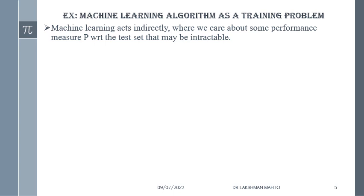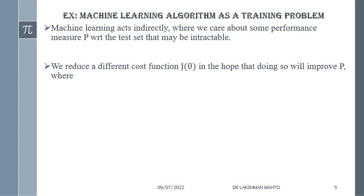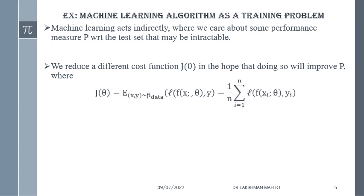In machine learning, we have to care about a performance index — some kind of performance measure with respect to test data. Generally that performance index is unknown. If it is unknown, how can we optimize it? It would be intractable. So instead of optimizing the performance index directly, we come up with an alternative called the cost function. Reducing the cost function is equivalent to improving the performance. The cost function is simply the expected loss, defined generically as the expectation of a loss over the data distribution.